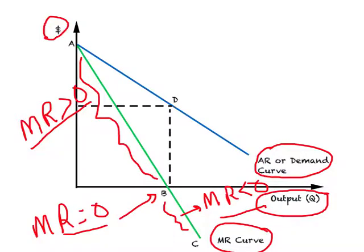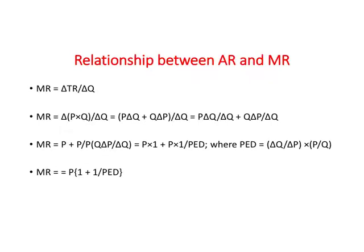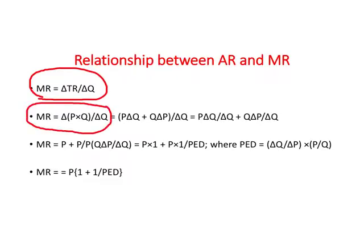We might be interested in figuring out the exact mathematical relationship between average and marginal revenue. Marginal revenue is change in total revenue divided by output, and total revenue is price times quantity, so we substitute that in. Opening the parentheses using calculus gives us a simple formula: the change in price times quantity in the numerator.